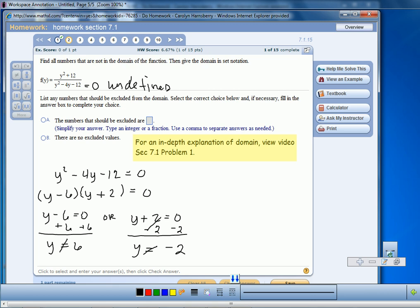So Y cannot equal negative 2 because if we plug negative 2 into the denominator in place of Y, we will end up with a zero in the denominator and we don't want that. So the numbers that should be excluded from the domain are 6 and negative 2.